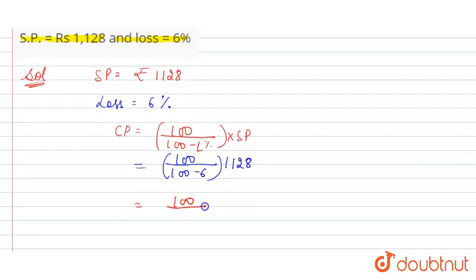Now solve this. 100 divided by (100 minus 6 equals 94) into 1,128. Now 1,128 divided by 94 equals 12. So the cost price is rupees 1,200.